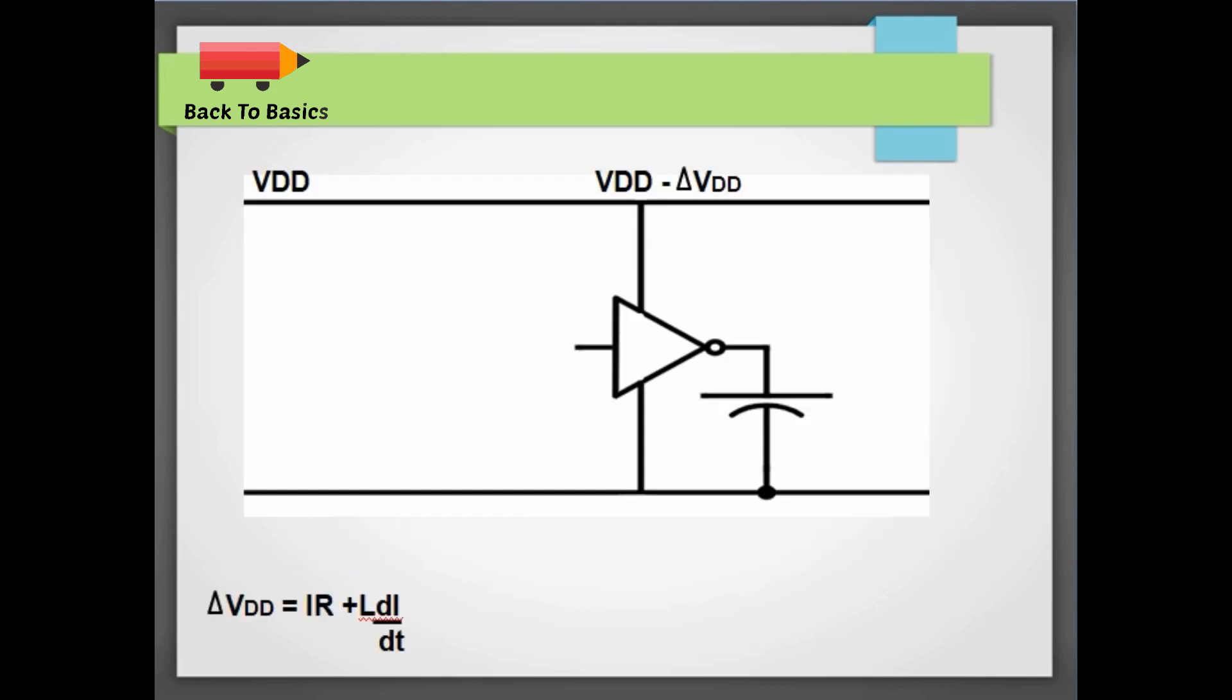So when current flows through these wires it sees a voltage drop and this voltage drop is I into R, IR. It is also known as IR drop.